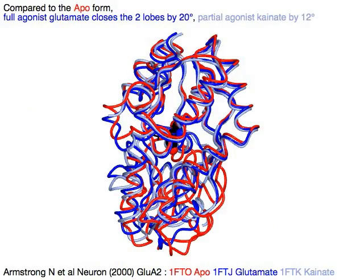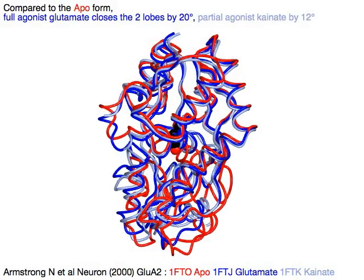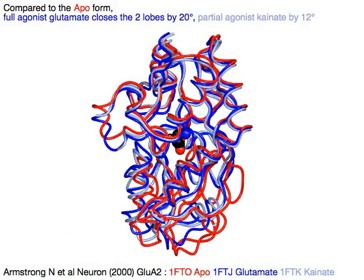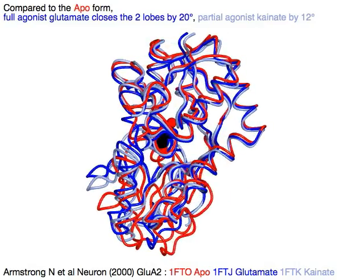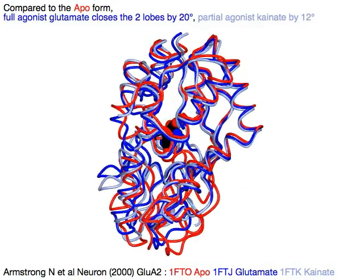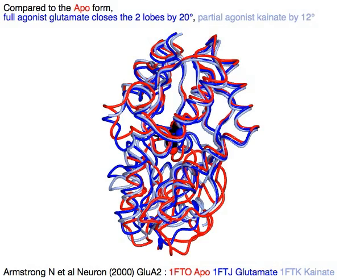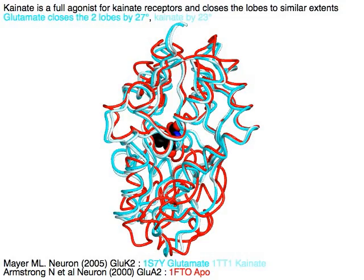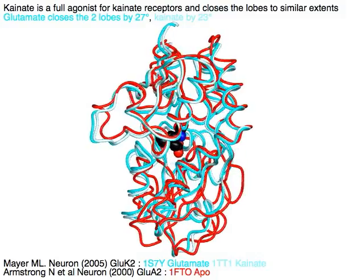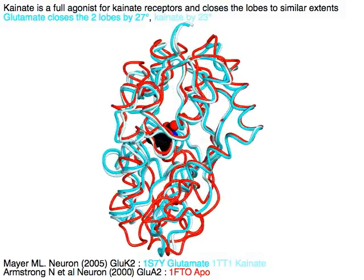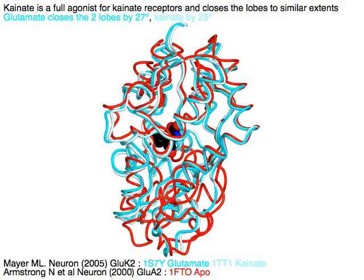Compared to the APO form, full agonist glutamate closes the two lobes by 20 degrees, and partial agonist kainate by 12 degrees. Kainate is a full agonist for kainate receptors and therefore closes the lobes to similar extents — glutamate closes the two lobes by 27 degrees, kainate by 23 degrees.